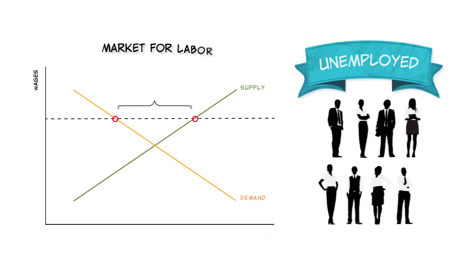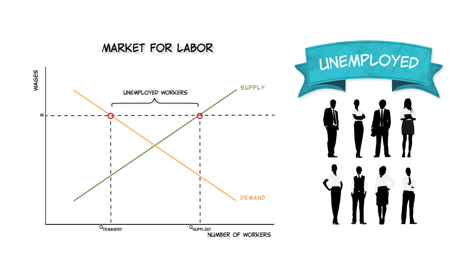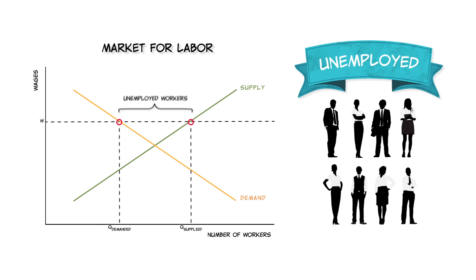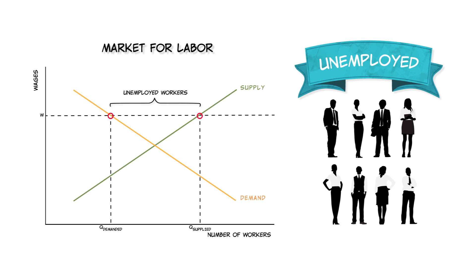However, people are more complicated than apples. In labor markets, they don't seem to behave in quite this way. Even when there are lots of unemployed workers — that is, a higher quantity supplied of workers than the quantity demanded — wages seem to fall more slowly than you would expect. Economists say that wages are sticky, and sticky wages reduce the incentives to hire more workers and slow the adjustment process.